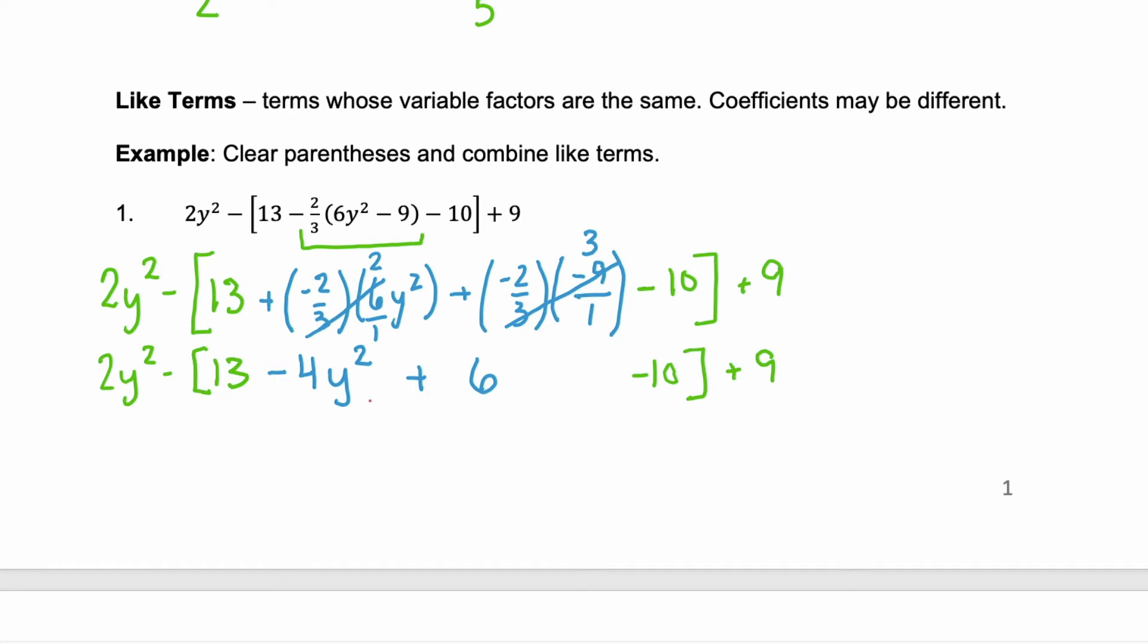Now, looking at the innermost parentheses that are left, we have some like terms. 13, 6, and negative 10. We can combine those like terms, our constants. 13 plus 6 is 19. Minus 10 is 9. So we have 9. And then let's rewrite the other parts that we have. Left inside is a minus 4y squared. And then at the end we have plus 9.